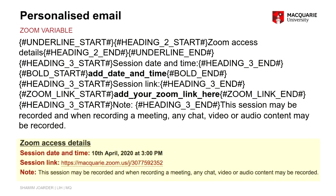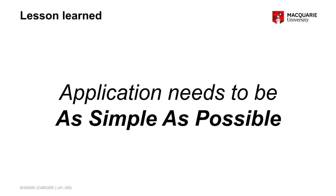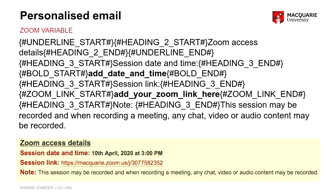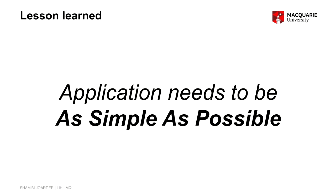There is also a Zoom variable. Since everything went online, I added it because everyone is using Zoom. If you select the Zoom variable, the whole template gets copied into your compose email and you just need to add the date, time, and your Zoom link. However, believe me — this is a lesson learned — no one has used this Zoom variable so far, because it looks too complicated and scary. The lesson learned here is: the application needs to be as simple as possible. Whatever you think is better or brilliant, if it's complicated, it won't get used.